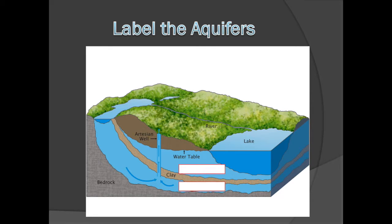Take a few moments and try to label the two aquifers as either confined or unconfined, based on the information given in the diagram. The top layer coincides with the water table and has a clay layer beneath it — therefore, it must be an unconfined aquifer. The second aquifer has a clay layer above and a layer of bedrock beneath it. We also notice that there is an artesian well coming from this layer, so this must be a confined aquifer.